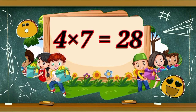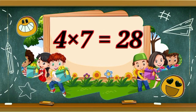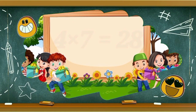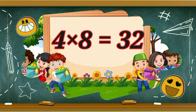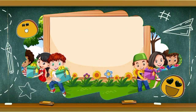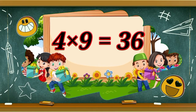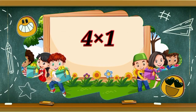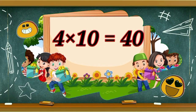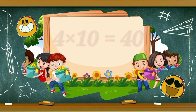4 7s are 28, 4 8s are 32, 4 nines a 36, 4 nines a 40.